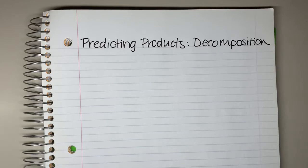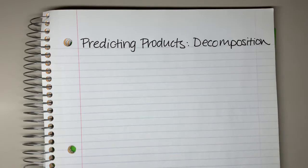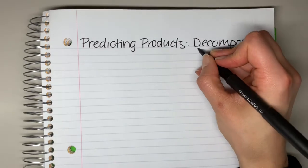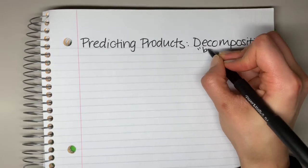In this video, we are going to cover how to predict products for decomposition reactions. Before we get into that, let's first talk about what the word decomposition means. If you are decomposing, or if something is decomposing, that means to break down.